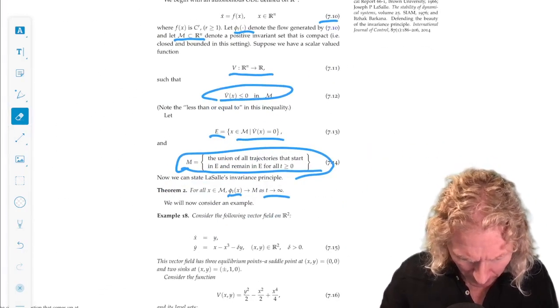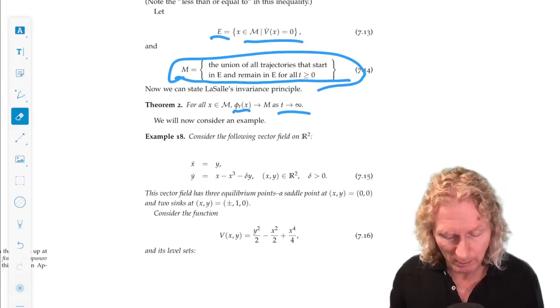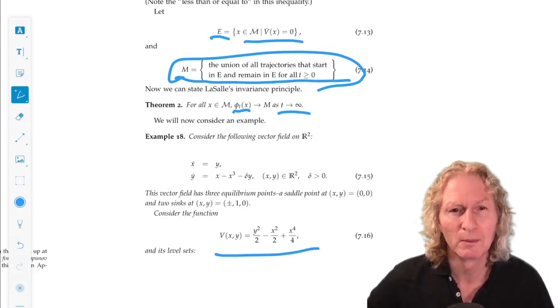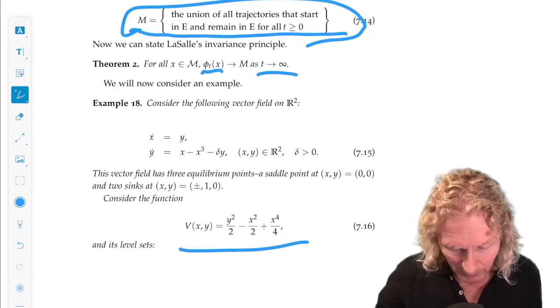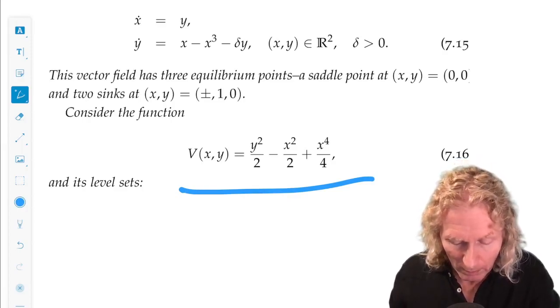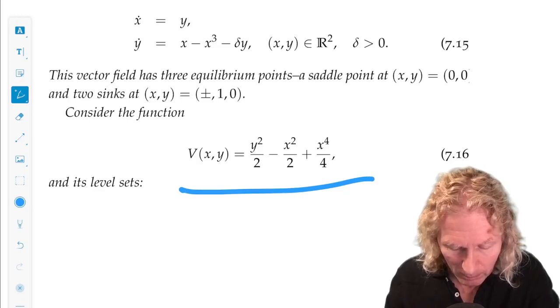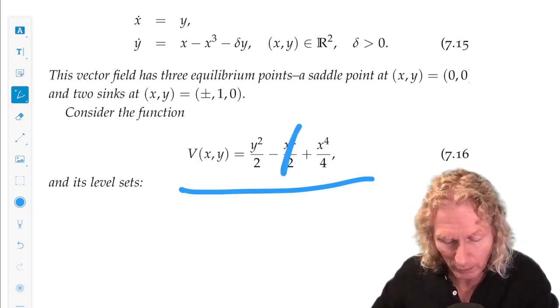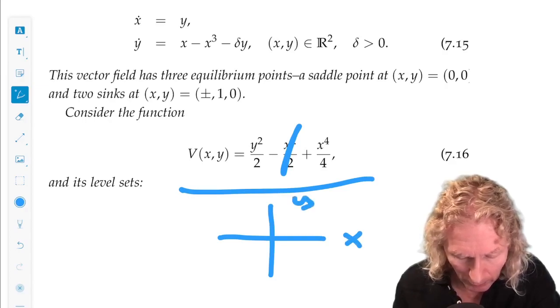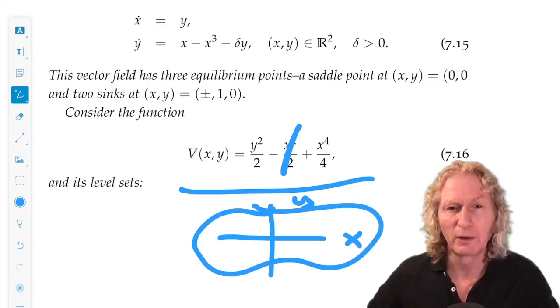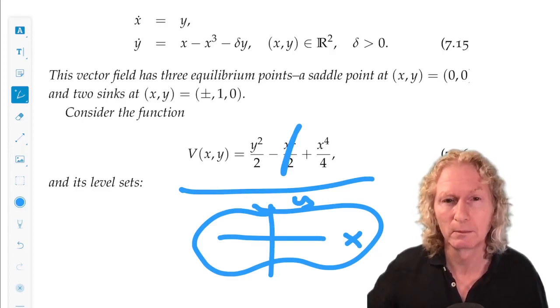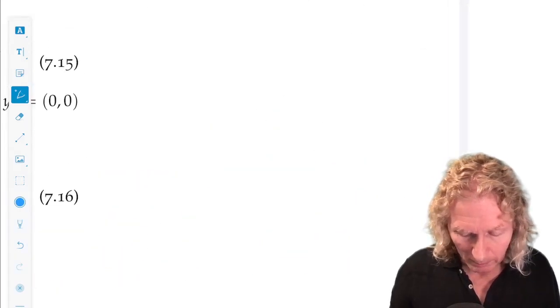We go back to here for this example. I need my function V, and this is what I'm going to use for V. Where did this come from? I'm not going to tell you quite yet, but I want to illustrate the method. What do the level sets of V look like? For x and y large, the dominant expressions are y²/2 and x⁴/4. So the level curves look like sort of peanuts for x and y large.